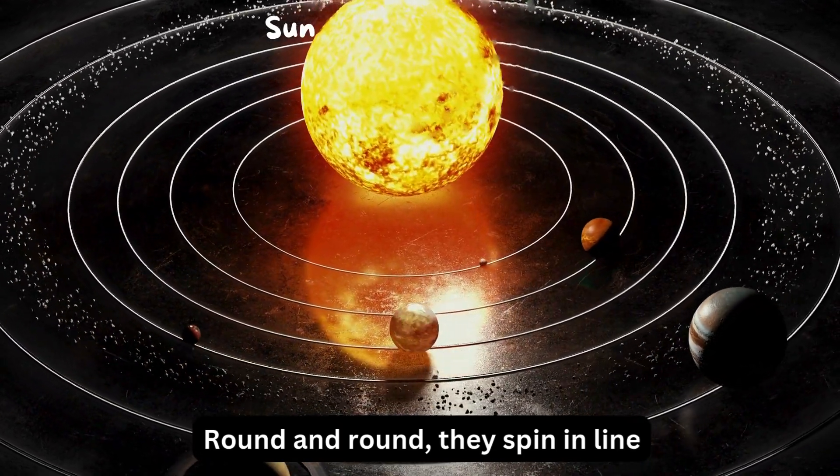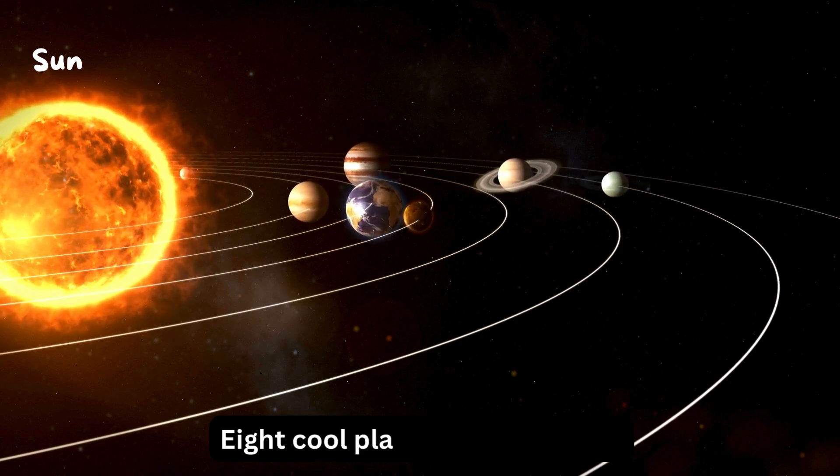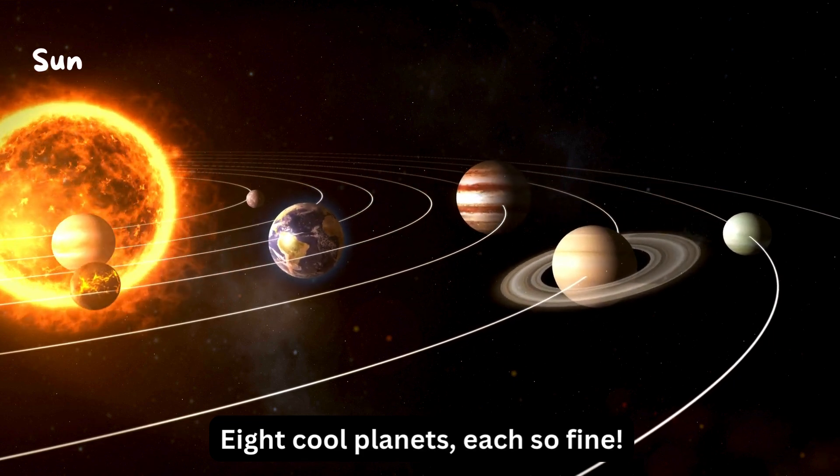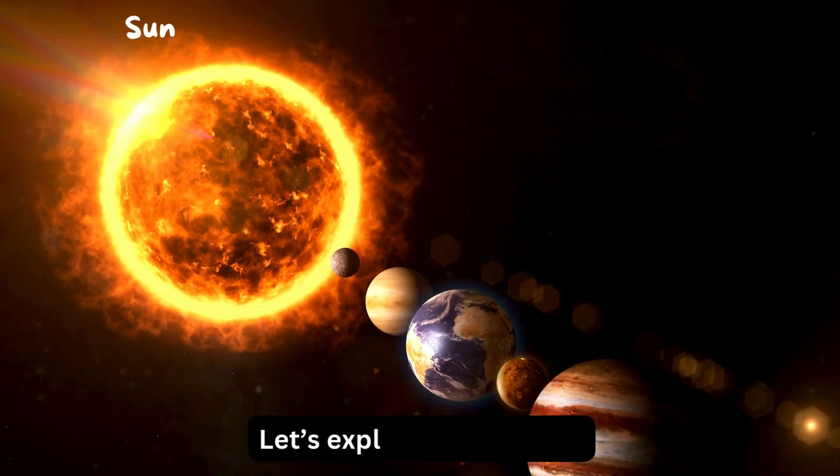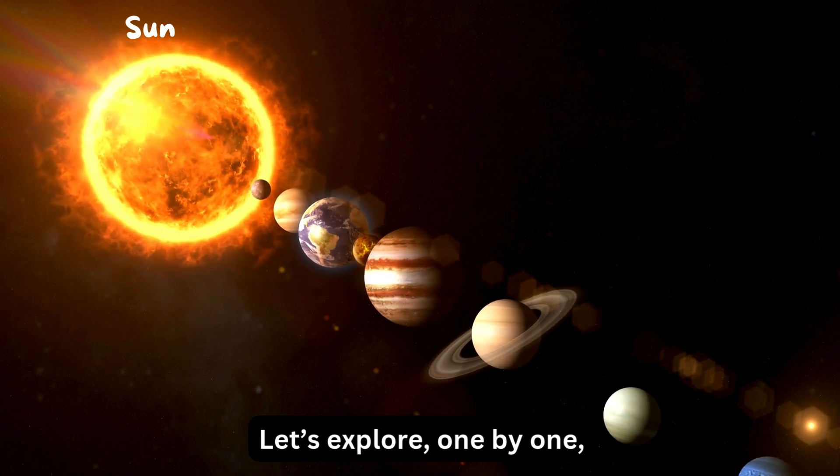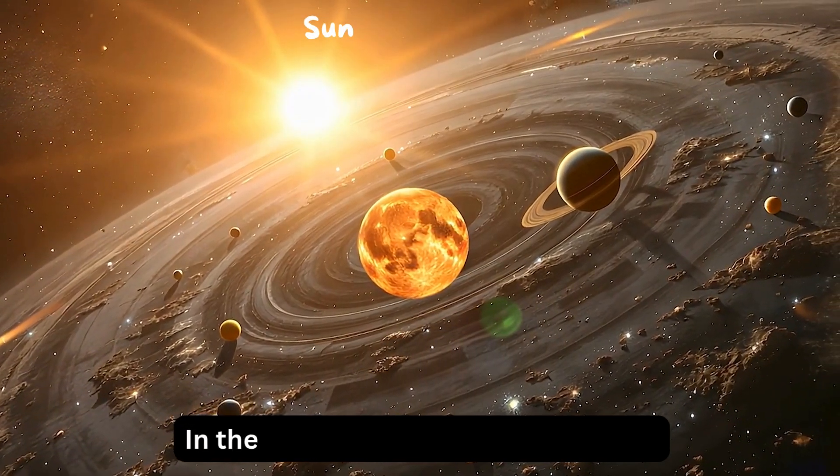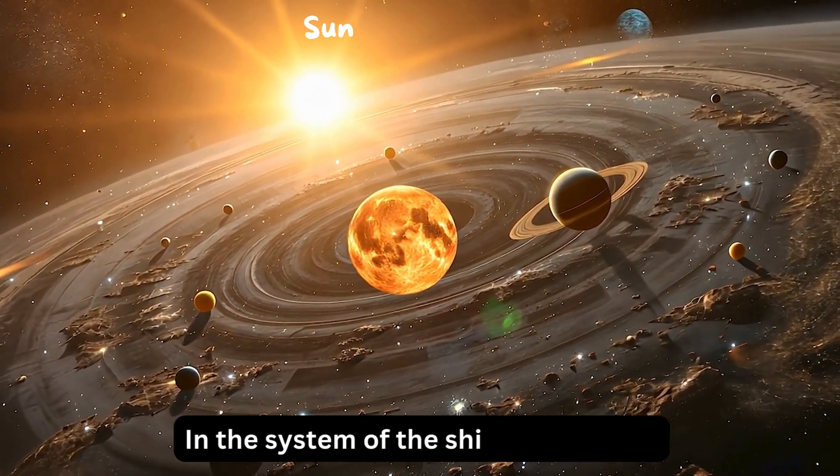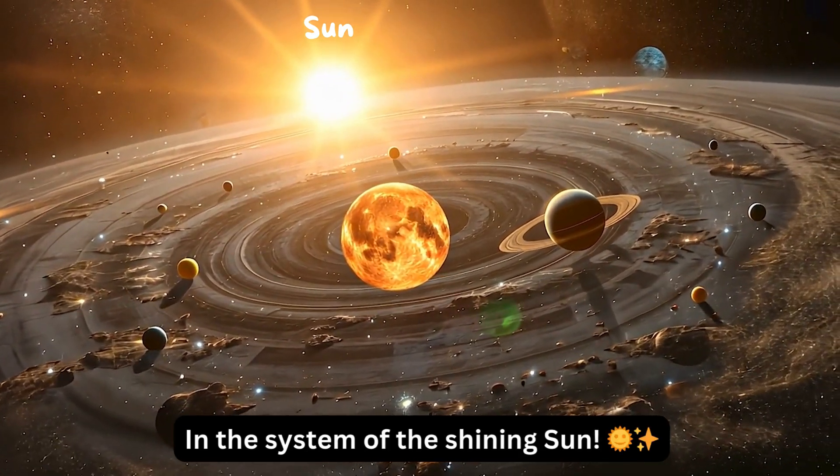Round and round they spin in line, eight cool planets, each so fine. Let's explore, one by one. In the system of the shining sun.